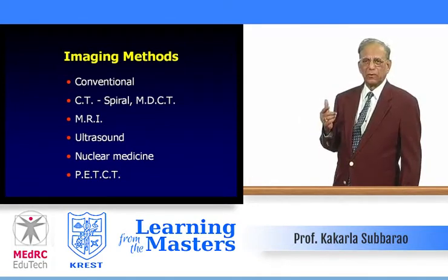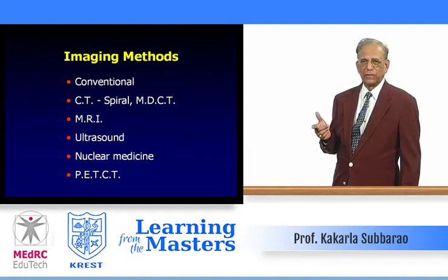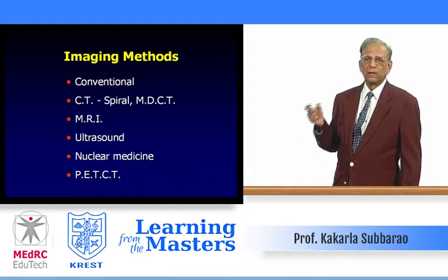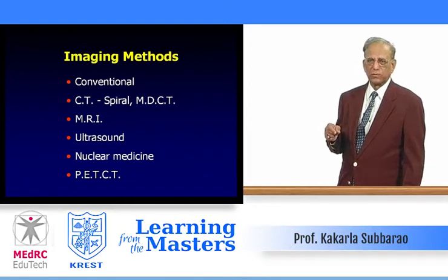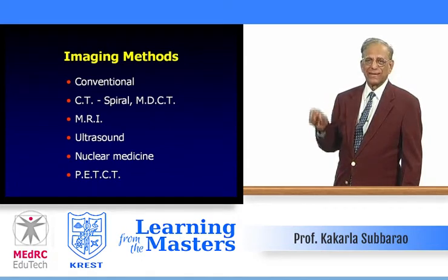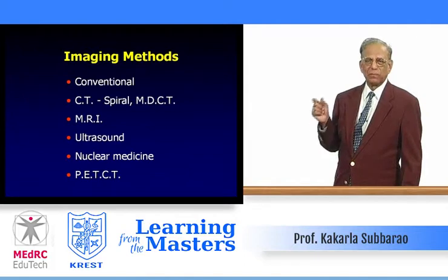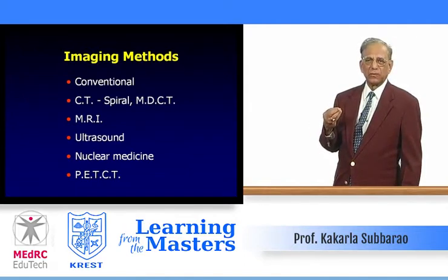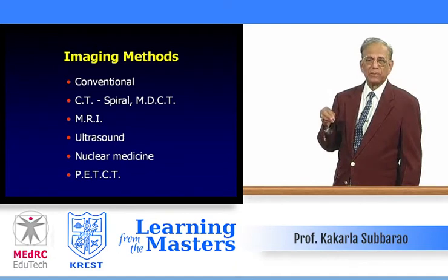PET-CT — positron emission tomography — uses radionuclide isotopes in association with computerized tomography. CT gives anatomical resolution, showing exactly where the lesion is, whereas PET scan is highly sensitive and picks up early lesions that other methods like MRI, CT, and ultrasound may not detect.